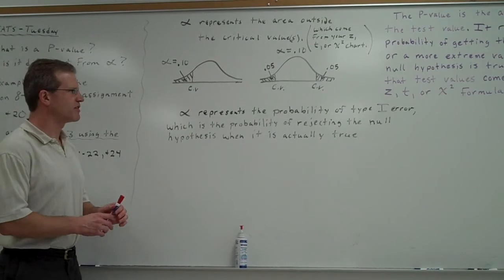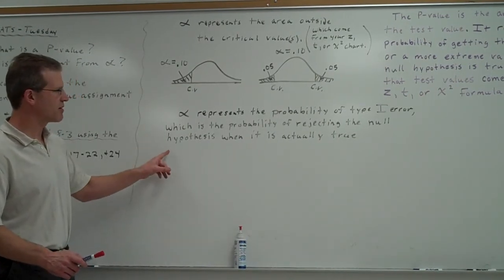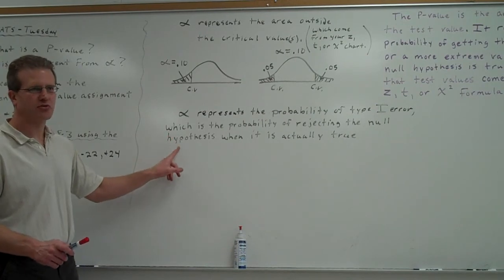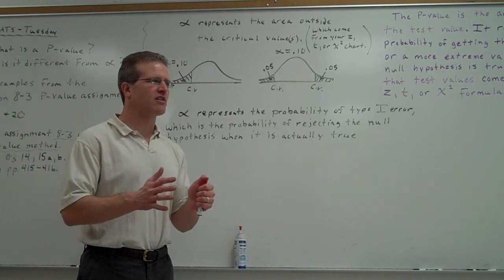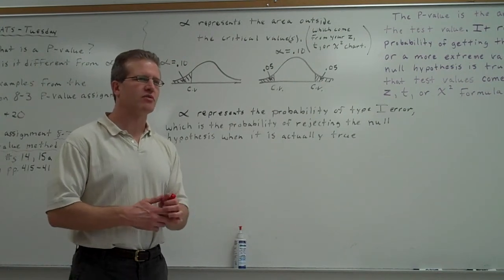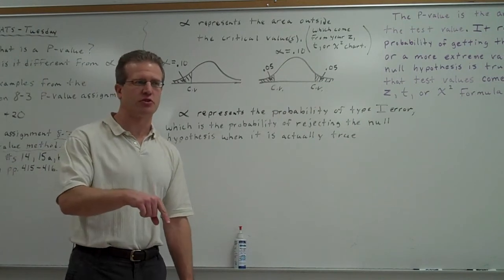Alpha represents the probability of type 1 error, which is the probability of rejecting the null hypothesis when it's actually true. So if you decide to do some type of study and you use alpha equal 0.05, you know that you still have a 5% chance that you're going to reject the null, even though it really should be true.